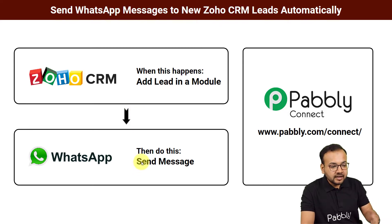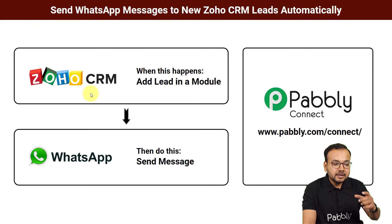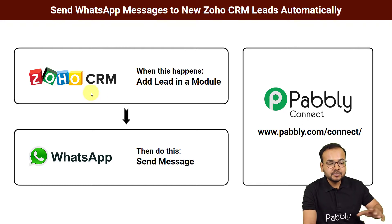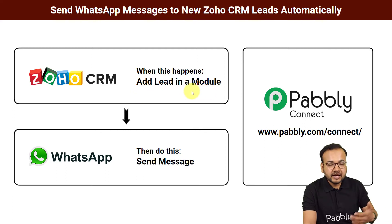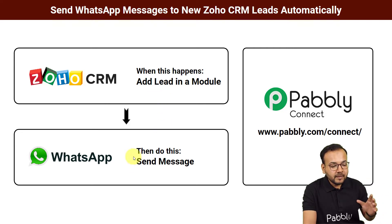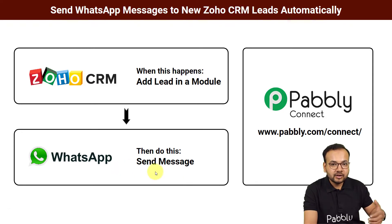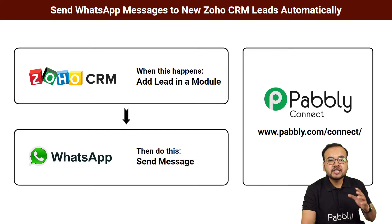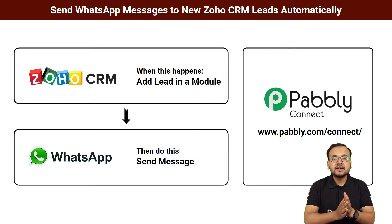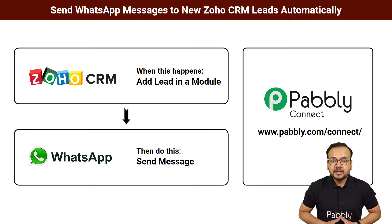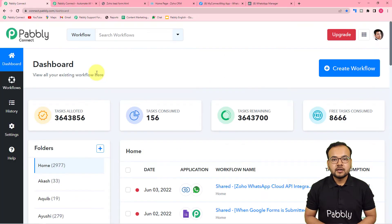Here is the flow of this automation. We use Zoho CRM — you can substitute any other CRM like HubSpot. We are adding a lead in a module, and as and when a lead is added, a WhatsApp message will be delivered automatically. To build this we are using Pably Connect, which is an integration and automation tool. The best part is anyone can set up this automation without any coding skills.